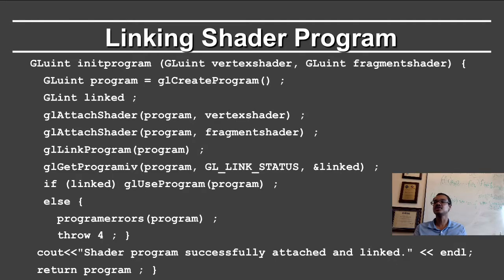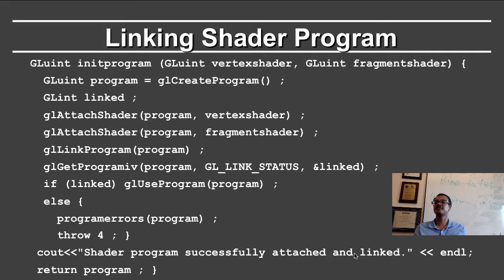Here is the code for linking the shader program. Given a vertex shader and a fragment shader, I want to link them together and use them in a shader program. First I create a new program. I attach the vertex shader to the program and the fragment shader to the program — both of these shaders are initialized by the function we saw earlier. I link the program, and just as I can get errors for shader compilation, I can get errors in linking. If linking succeeded, I use the program directly. Otherwise, I report the errors and throw an exception. Finally, I print out that the shader program is successfully attached and linked.